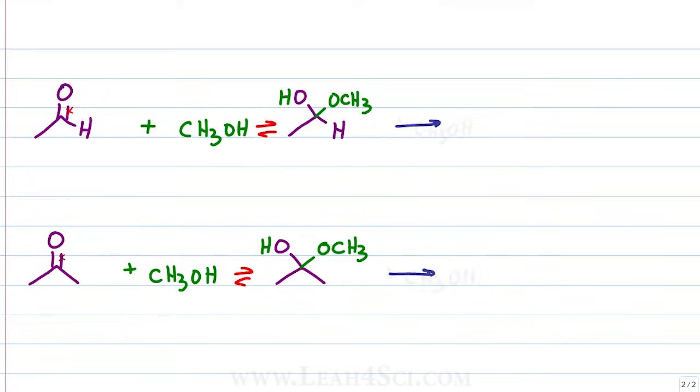Reacting this with one more alcohol will ultimately displace the OH group and give us a second OR on the molecule. When starting with an aldehyde, the final product still has an H and two OR groups. When starting with a ketone, the final product has two carbons and two OR groups.